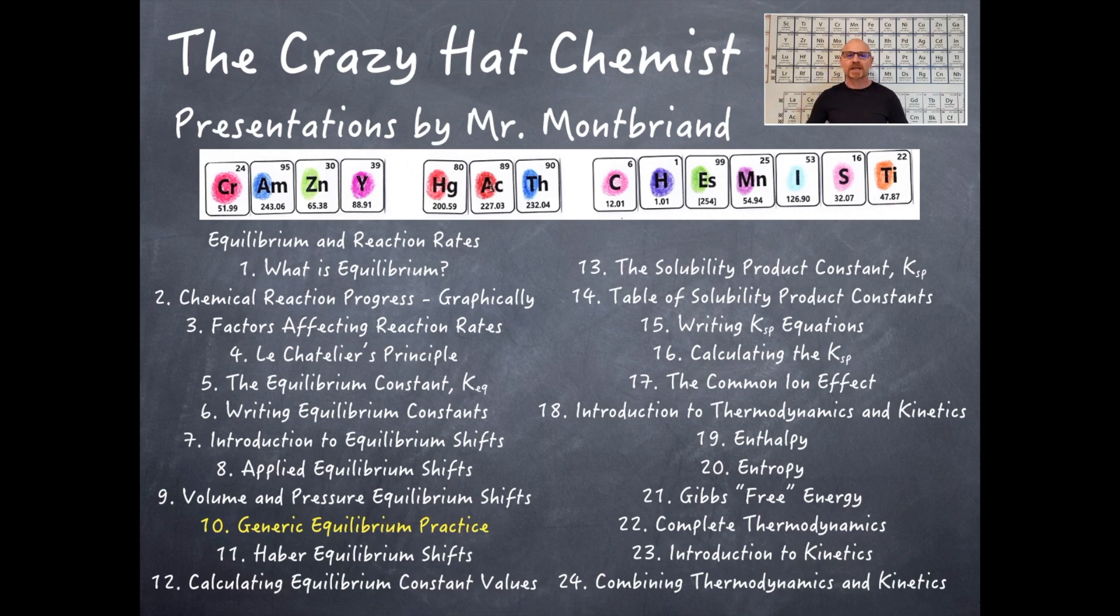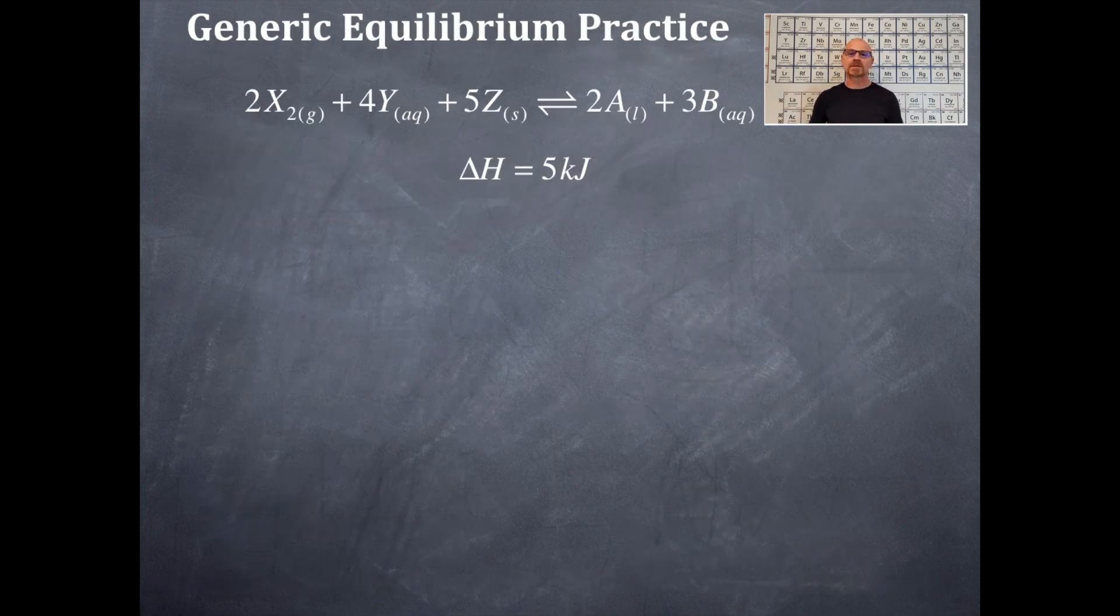Welcome to the Crazy Hat Chemist. So here we go. Equilibrium and reaction rates, and we're doing video number 10. So look at this equilibrium expression equation very carefully. I want you to look at the states of matter, the delta H, the formulas, and the stoichiometric coefficients. It is an equilibrium because you see that double-headed arrow over there. This is some generic practice with non-existent formulas.